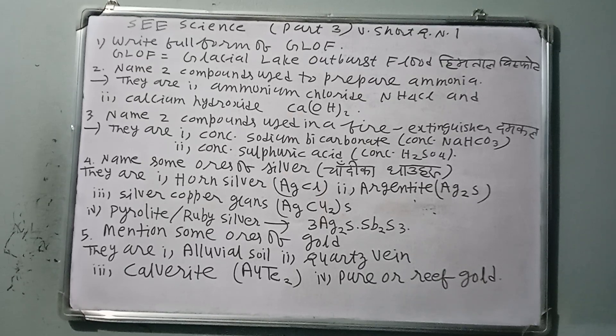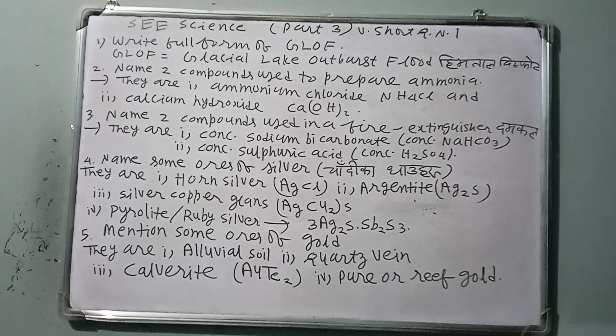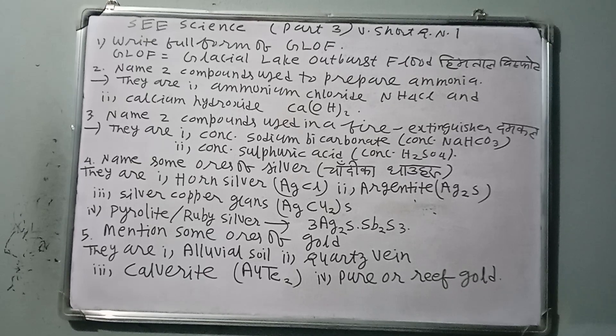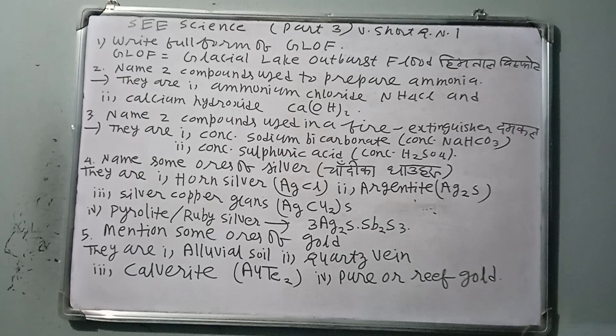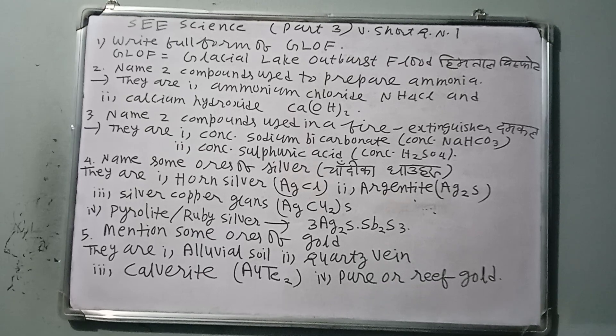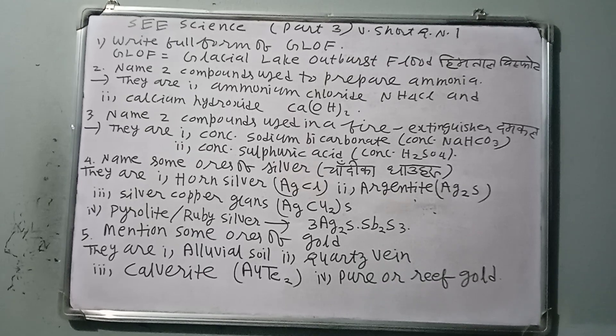Number three, silver copper glance, formula AgCu2S. Number four, Argentite may be Pyrolight or Ruby Silver, formula 3Ag2S.Sb2S3, where Ag is silver, S is sulfur, Sb is Stibium, and S3 is sulfur.